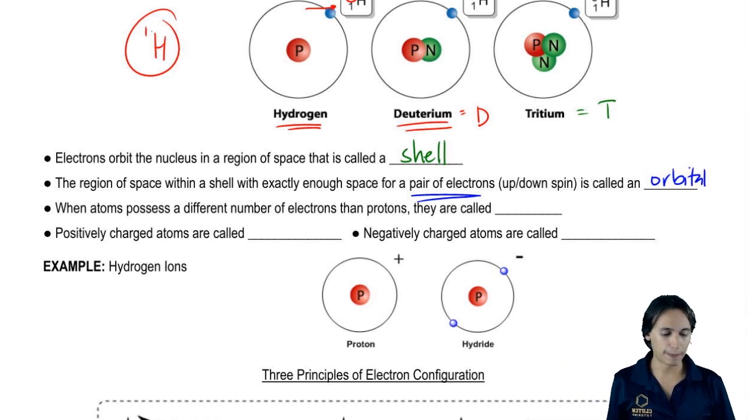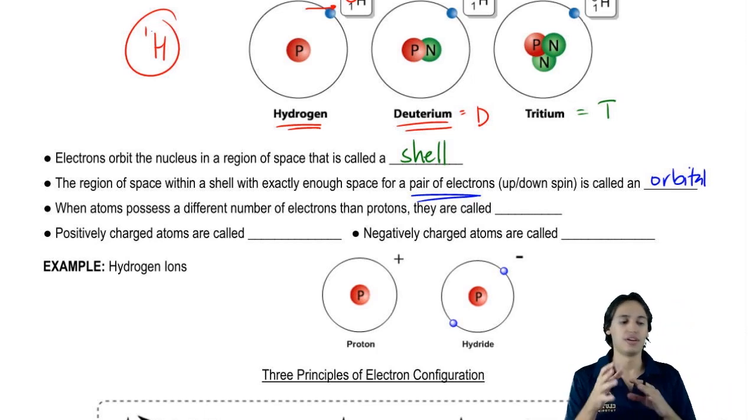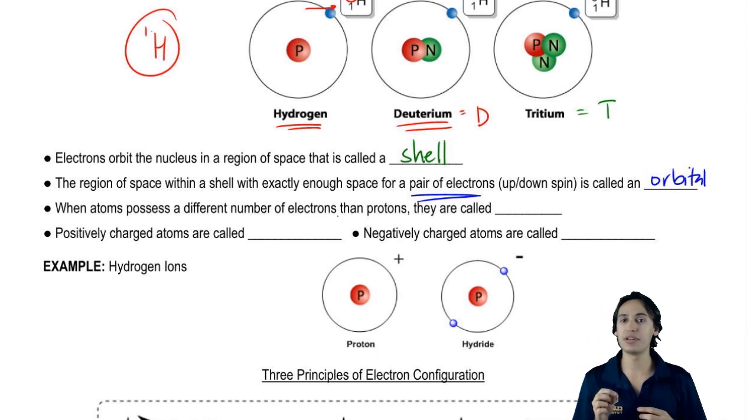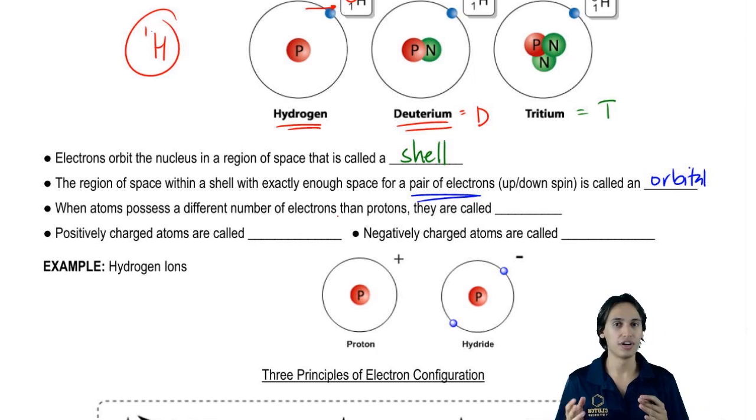We already talked about what happens when atoms have different amounts of neutrons. But when atoms possess a different number of electrons than protons, so now we're talking about what happens if they have different amounts of electrons. What's going to happen is that instead of being heavier or lighter, electrons don't really contribute to mass very much.